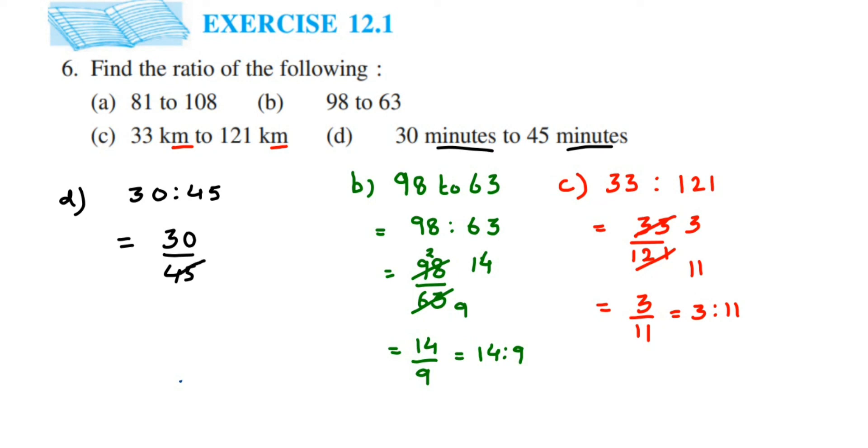Now cancel this. You can cancel this in 5 table: 5 nines are 45, 5 sixes are 30. We got 6 by 9. We can cancel this again in 3 table: 3 twos are 6 and 3 threes are 9. So we got here 2 by 3. If you convert back this into ratio, this will become 2 is to 3.